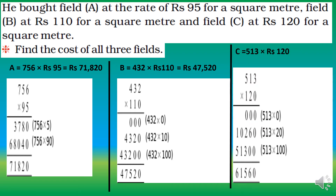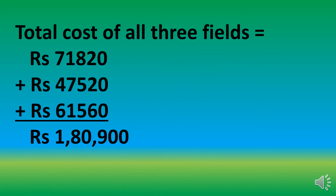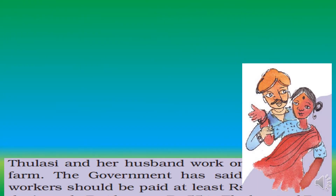Field C was bought at rupees 120 per square metre. Cost of Field C: 513 × 120. Using Bela's method: 513×0 = 0, 513×20 = 10,260, and 513×100 = 51,300; adding gives rupees 61,560. The total cost of all three fields: 71,820 + 47,520 + 61,560 = rupees 1,80,900.